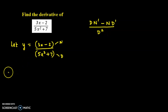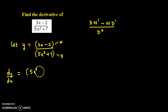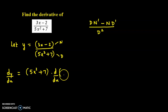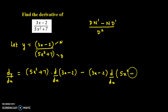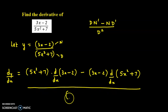So let us apply the quotient rule. We get dy by dx is equal to (5x squared plus 7) into derivative of the numerator — numerator is (3x minus 2) — minus numerator into derivative of the denominator, that is (5x squared plus 7), divided by denominator squared.